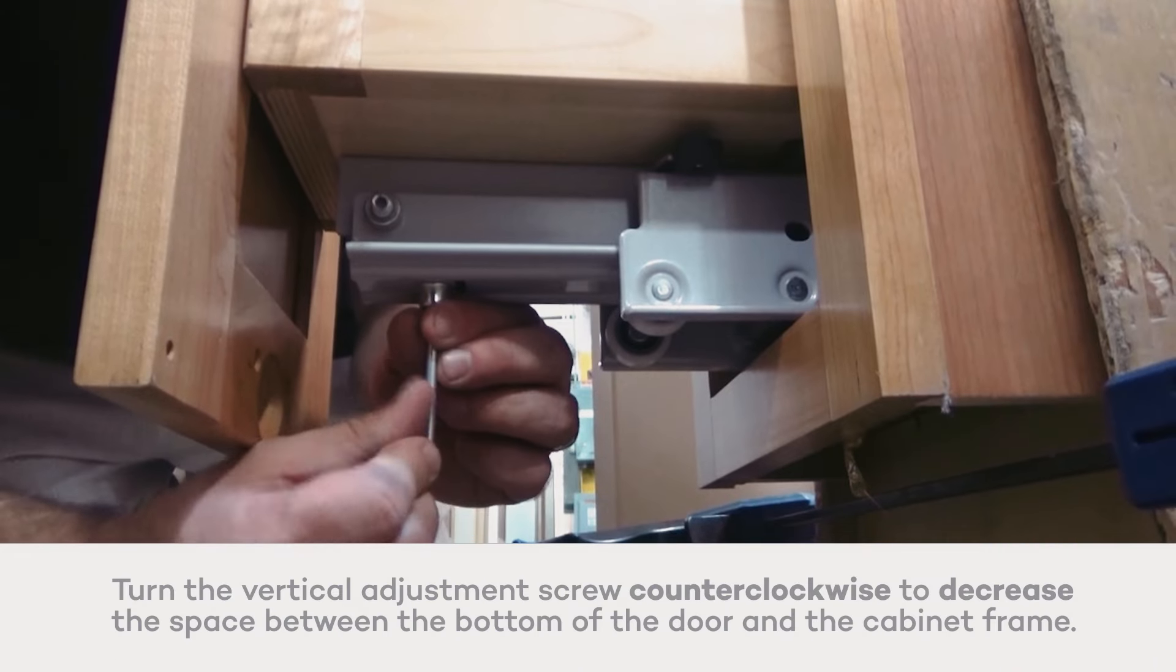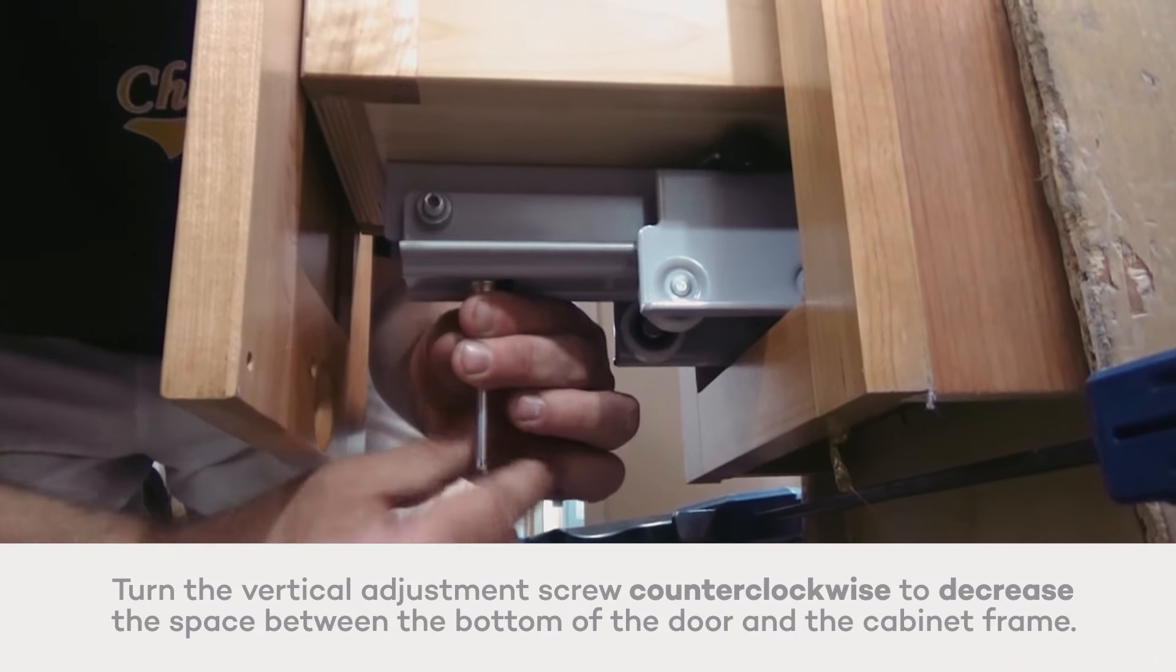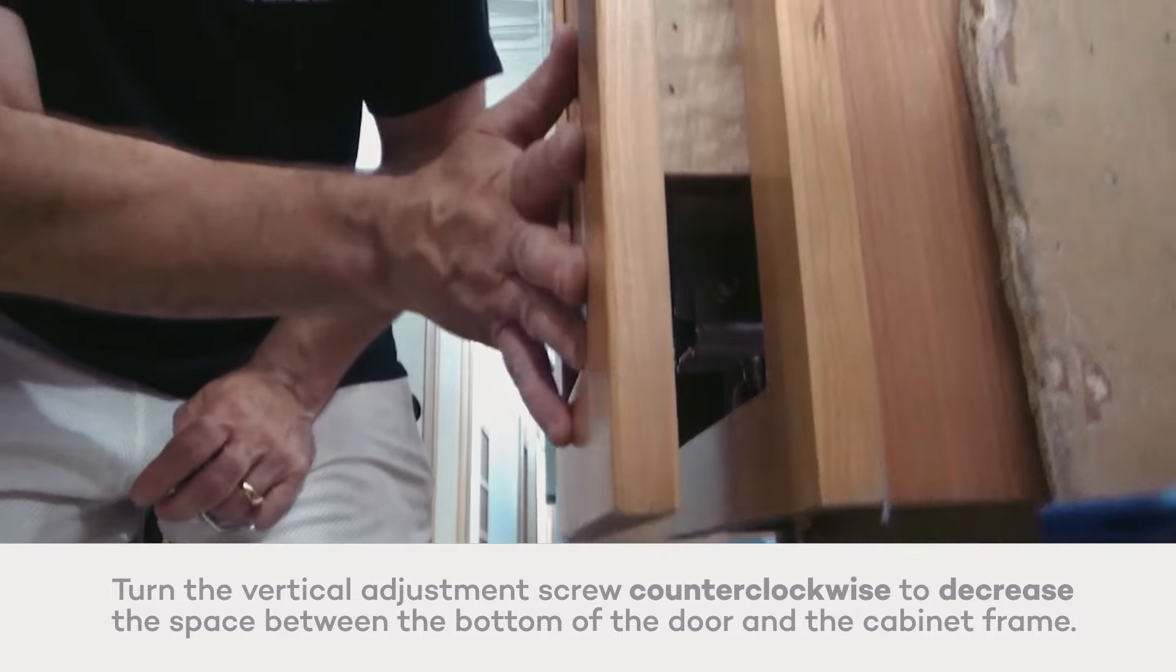To decrease the amount of space between the bottom of the door and the frame, turn the vertical adjustment screw counterclockwise. This moves the door closer to the frame.